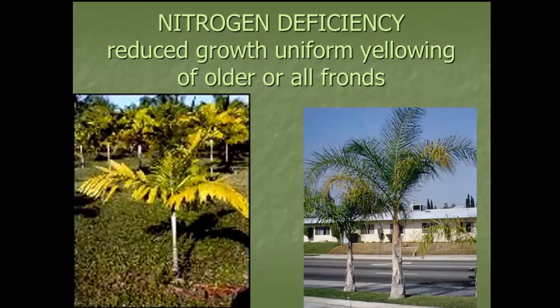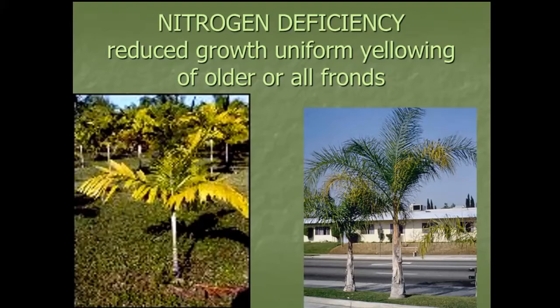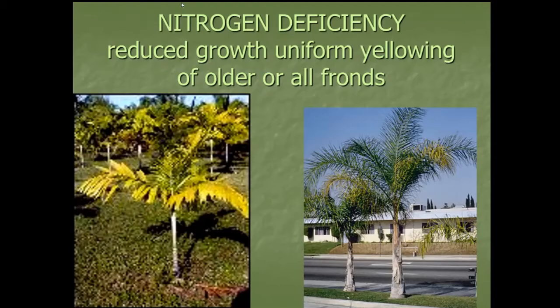The first nutritional deficiency is nitrogen. It's easy to recognize because basically the palm looks all yellow — all the fronds are yellow, or all those older fronds are turning yellow. That's a sure sign of nitrogen deficiency. To correct it, just apply nitrogen fertilizer and it will start to green up your palm. Ideally, get started fertilizing with a palm special fertilizer. Nitrogen deficiency presents as overall yellowing of the entire palm.